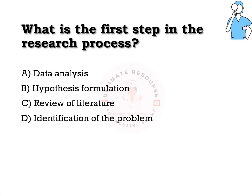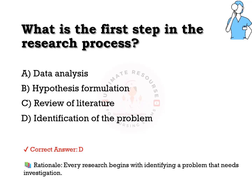What is the first step in the research process? Options are: a) data analysis, b) hypothesis formulation, c) review of literature, d) identification of the problem. The answer is d) identification of the problem. Every research begins with identifying a problem that needs investigation.